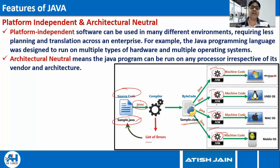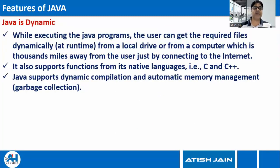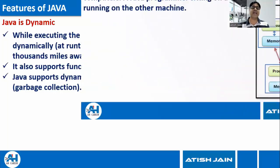In future sessions, there will be a deeper session explaining how Java programs execute inside memory. Java is dynamic — while executing Java programs, the user can get required files dynamically from a local drive or from a computer that is a thousand miles away, just by connecting to the internet. If an application requires any supporting file at runtime, it can load that file into memory during execution, or take it from an online repository. This is why Java is called a dynamic programming language.